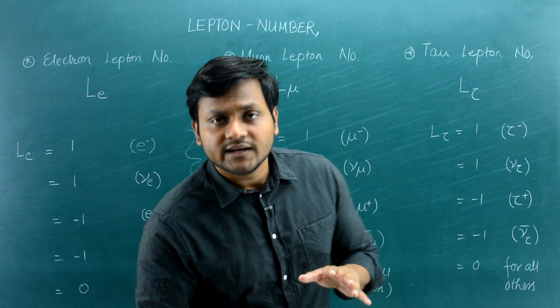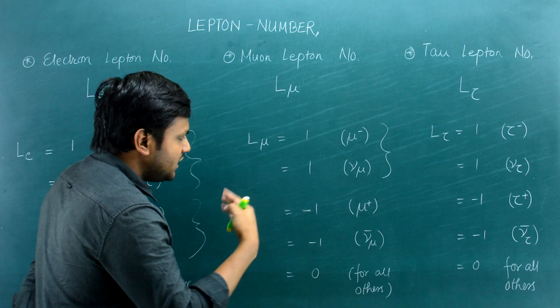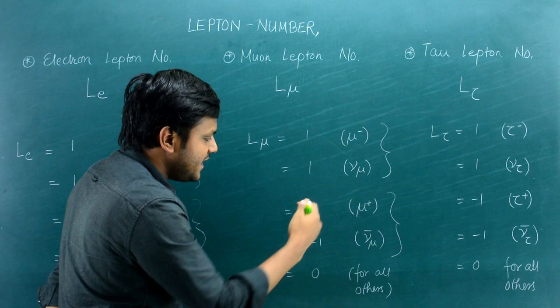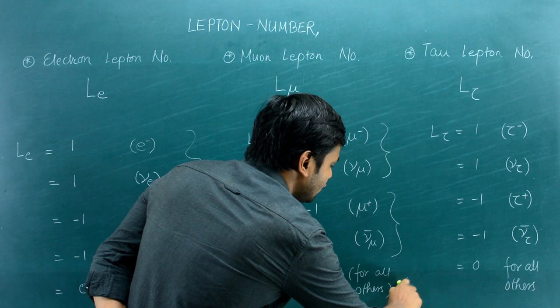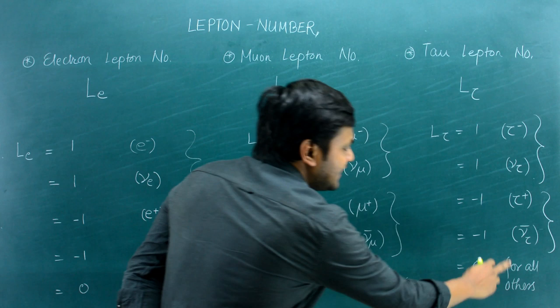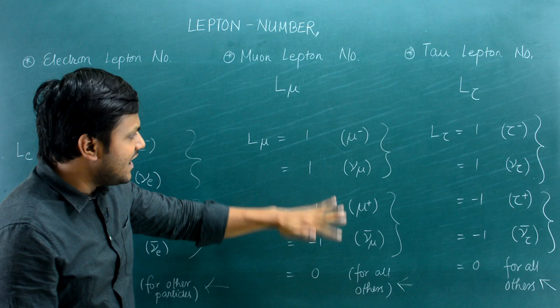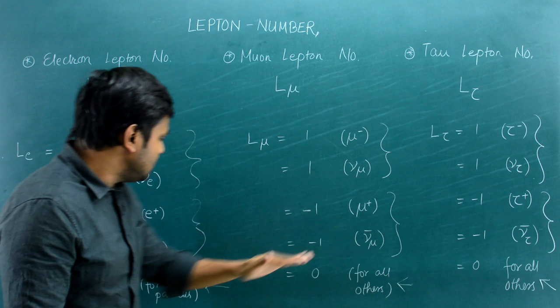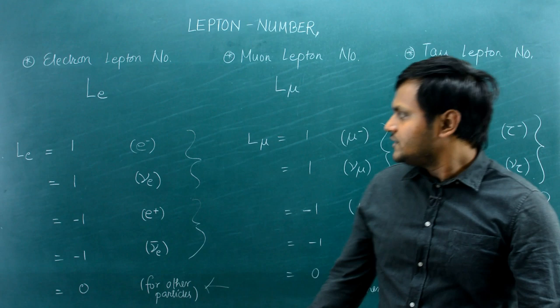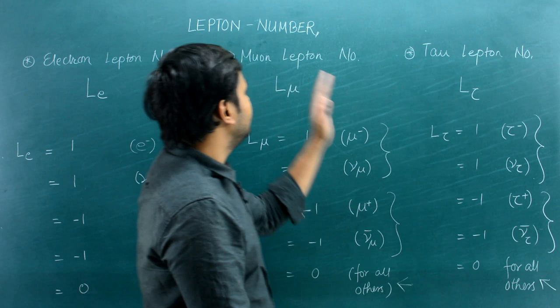Similarly, the muon number has a value of +1 for the muon particle and muon neutrino, −1 for the anti-muon and anti-muon neutrino, and 0 for all other particles. The tau number has a value of +1 for the tau particle and tau neutrino, −1 for the anti-tau and anti-tau neutrino, and 0 for all other particles. So even though these three numbers are distinct, their values follow the same pattern: +1 for particles, −1 for antiparticles, and 0 for everything else.